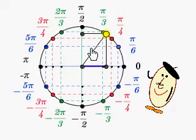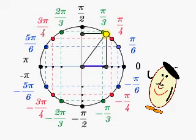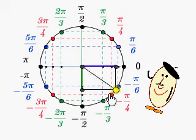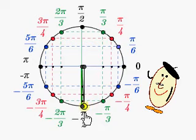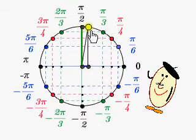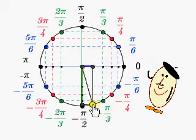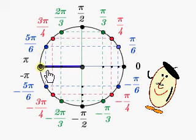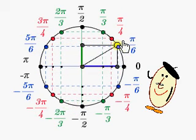Let us see now the y-coordinate — the green one here. It is the sine, ranging between negative 1 and plus 1.